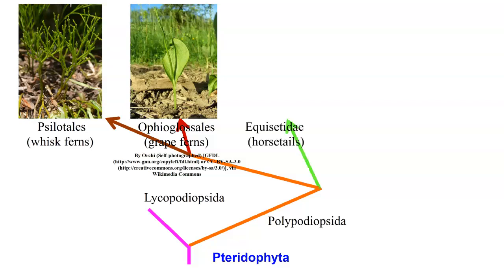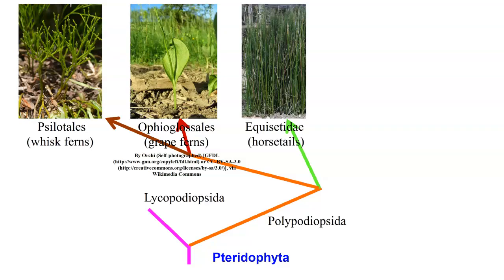We have the equisetidae — 'equine' meaning horse — and we call these horsetails. The horsetails are very interesting. They have a lot of silica on the outside, so they're not really what you'd call edible. They're hard and crunchy and don't have a nice format in your mouth. They form a rather unique group as well.